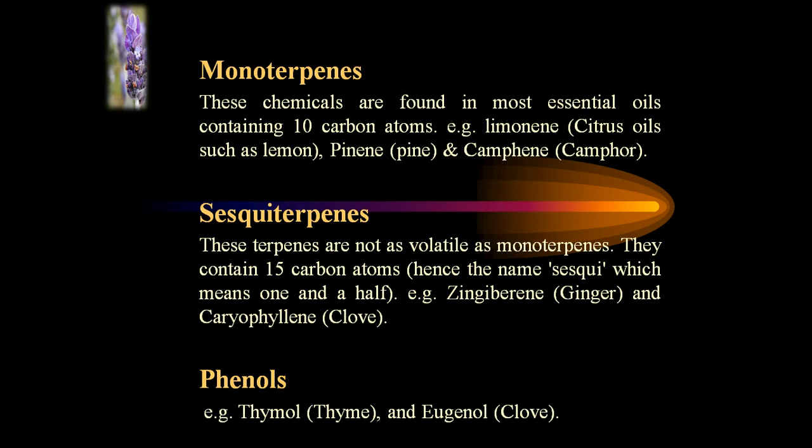Coming to the next category: sesquiterpenes. These terpenes are not as volatile as monoterpenes. They contain 15 carbon atoms, and hence the name sesquiterpenes, which means 1.5. Examples of sesquiterpenes are zingiberene and caryophyllene.